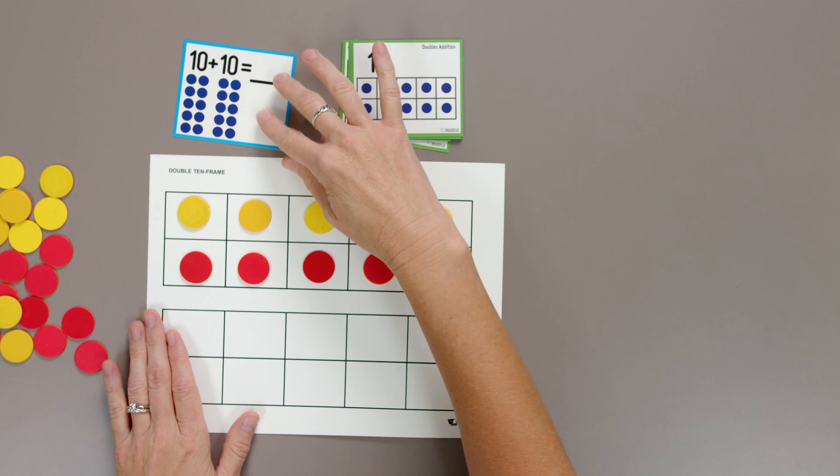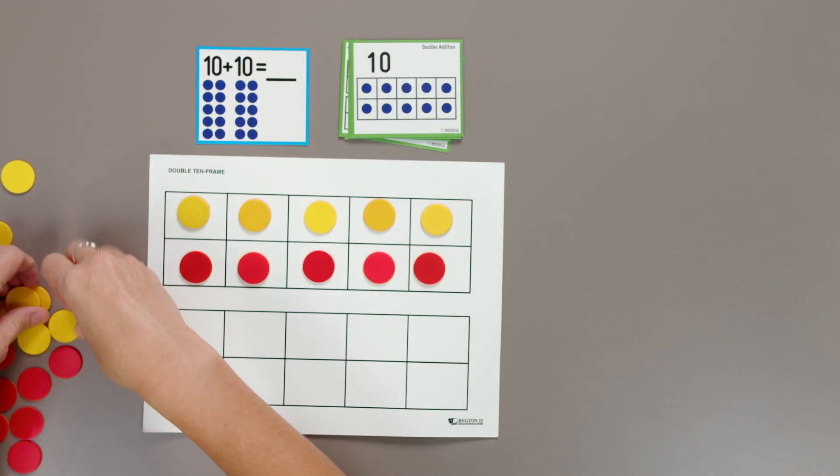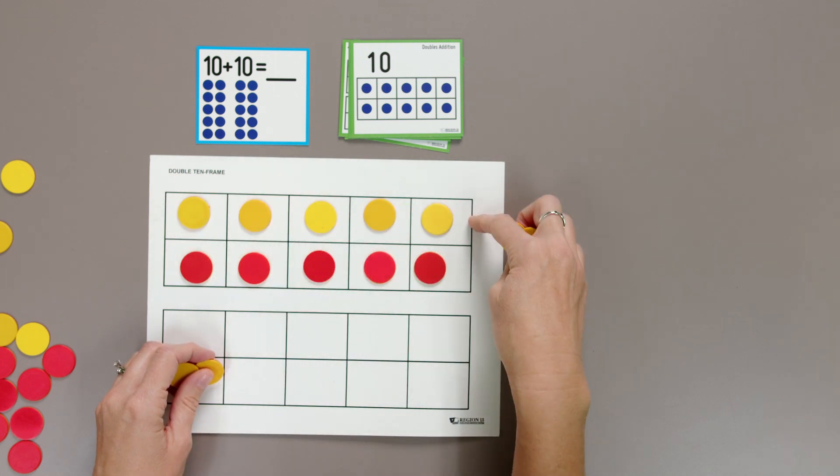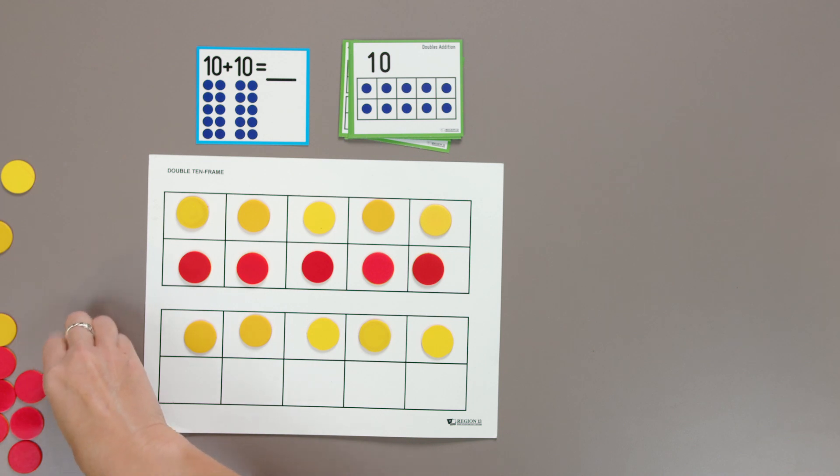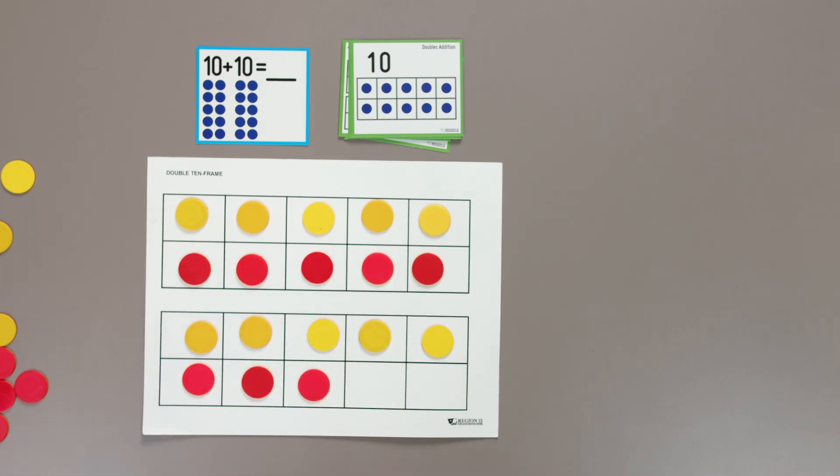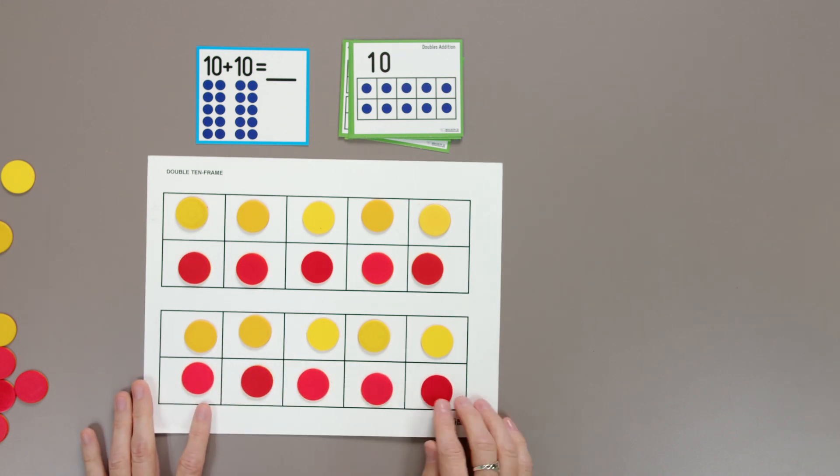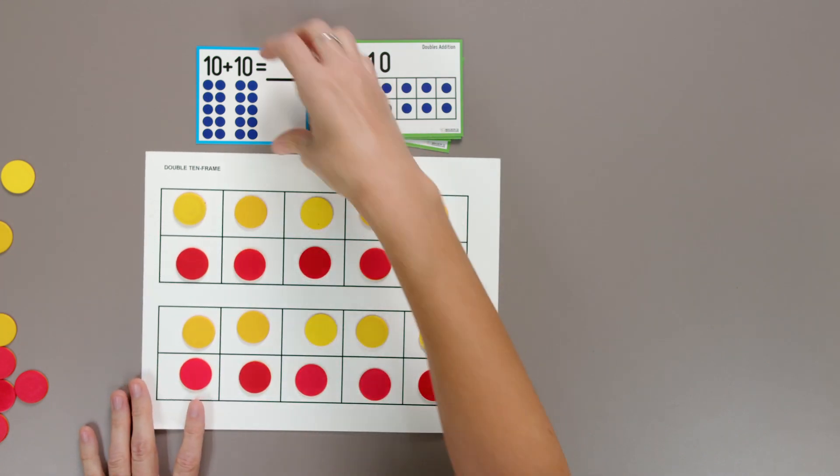Last one. 10 plus 10. Do you already know? Let's just double check. Five, six, seven, eight, nine, ten yellow, and five, six, seven, eight, nine, ten red. 10 and 10 equals 20. Good work.